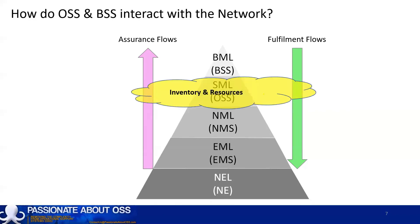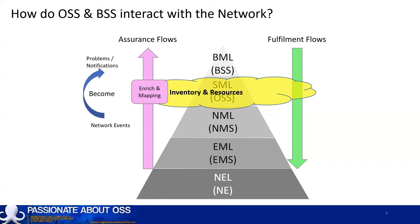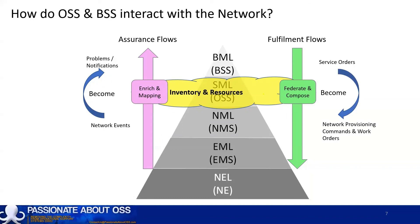In the middle, at the OSS and service management layer, is an inventory and resource management tool that helps these two flows along the way. It helps to enrich the alarms that are then sent on as notifications to customers. It also helps to federate and compose information that allows us to orchestrate activation orders before they're pushed into the network as network provisioning commands and work orders. There are also other flows that go across this stack, such as discovery of network inventory data or other data sources that come into the inventory pool of resources.